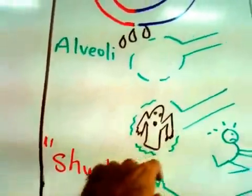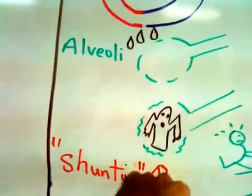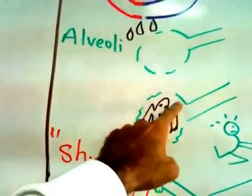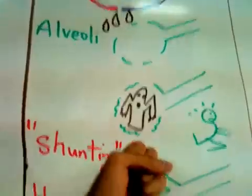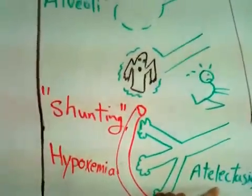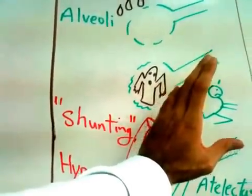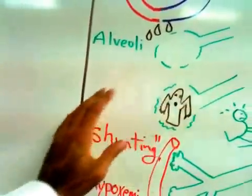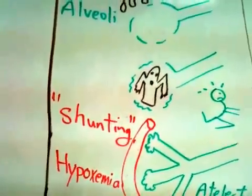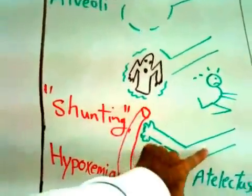Therefore, surfactant is lost due to this proteinosis—plasma protein. Because surfactant goes away, the alveoli collapse. When alveoli collapse, the patient experiences some kind of atelectasis, meaning even a lobe or some lobes of the lung collapse.